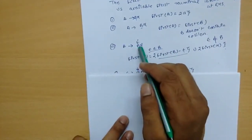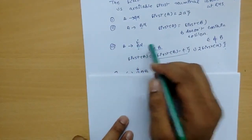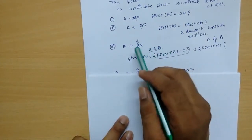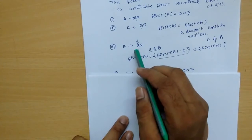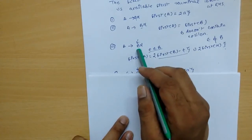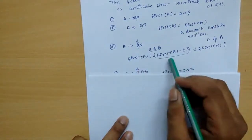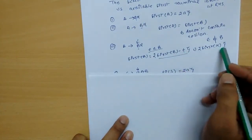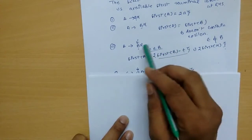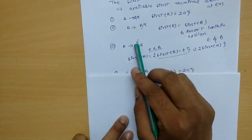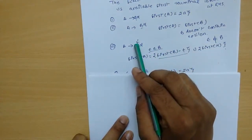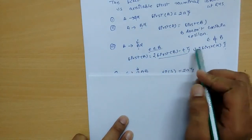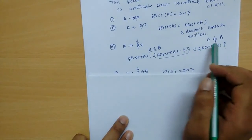Rule 3: suppose there is a production A → B α and epsilon belongs to the first set of B. Then the first of A will be the first set of B excluding epsilon, union the first set of alpha. Since epsilon can replace B, it becomes A → α, so first of A = (first(B) − {ε}) ∪ first(α).